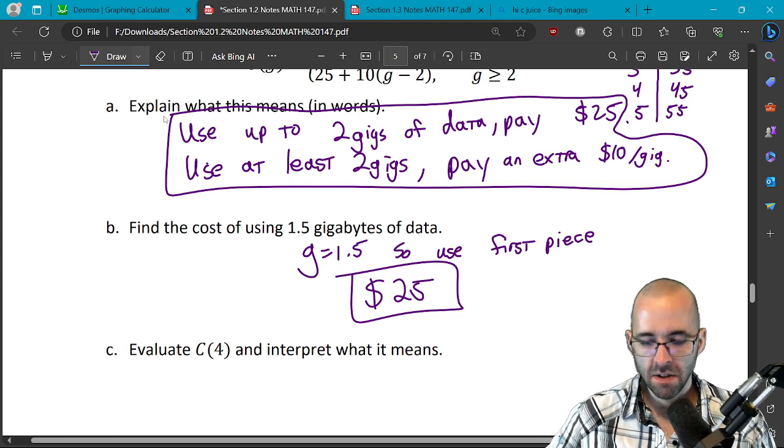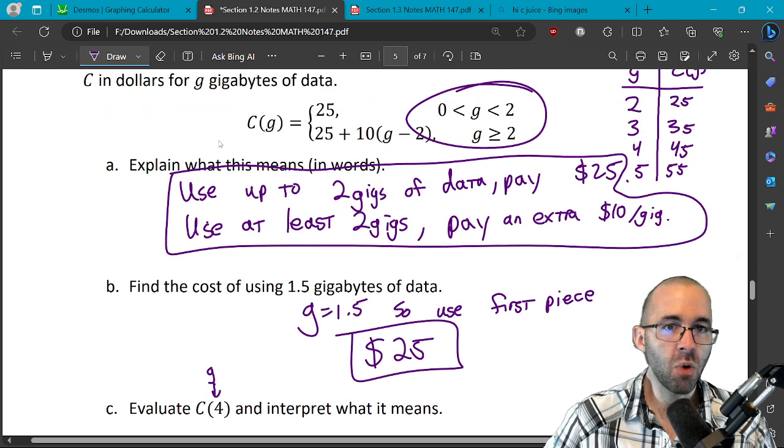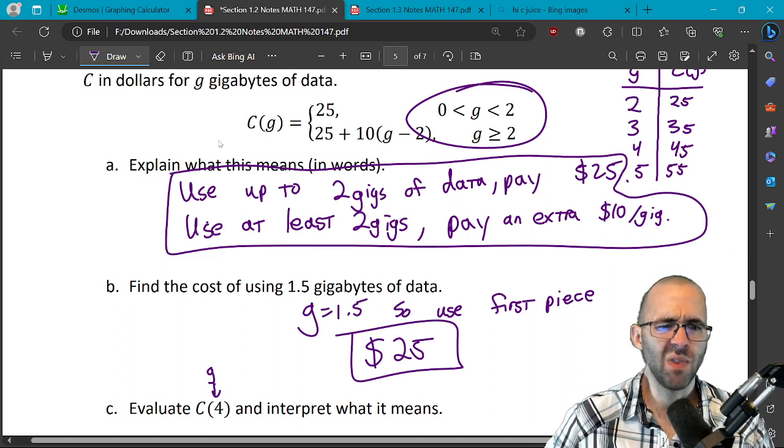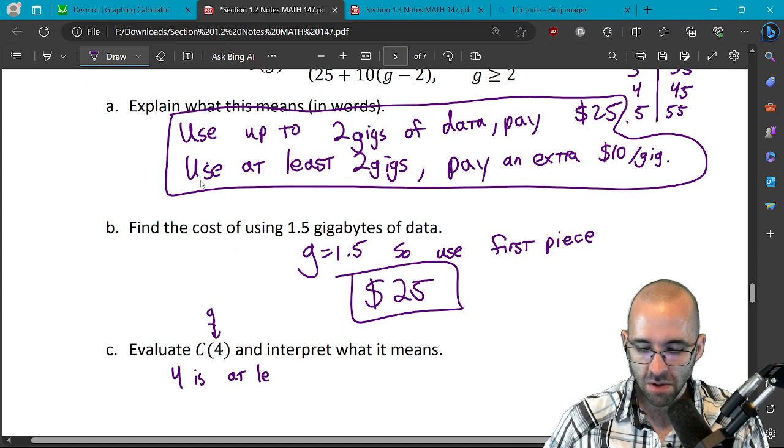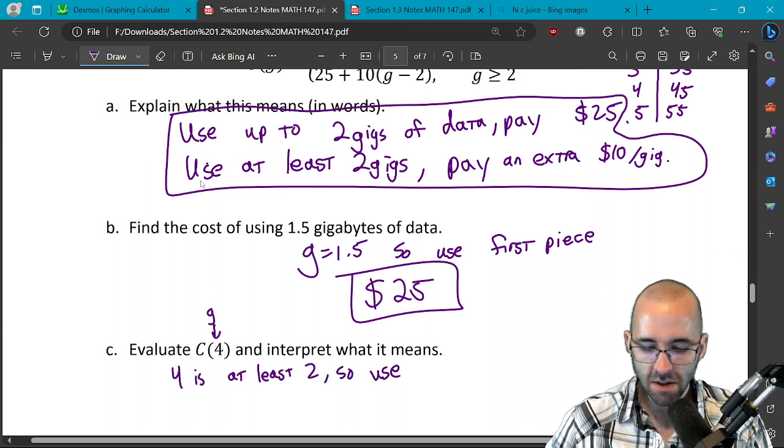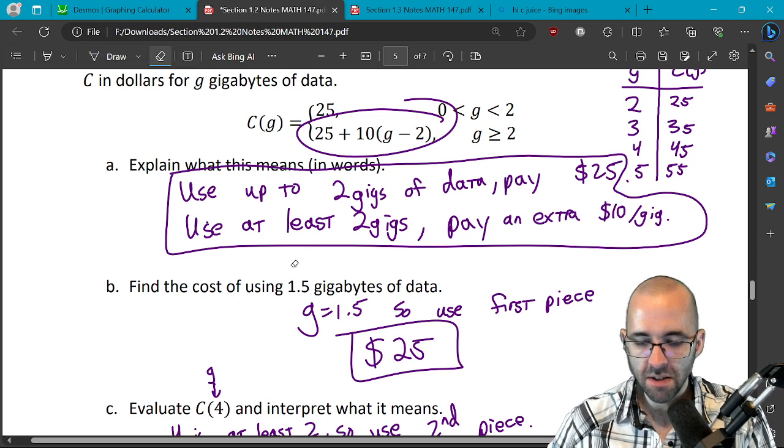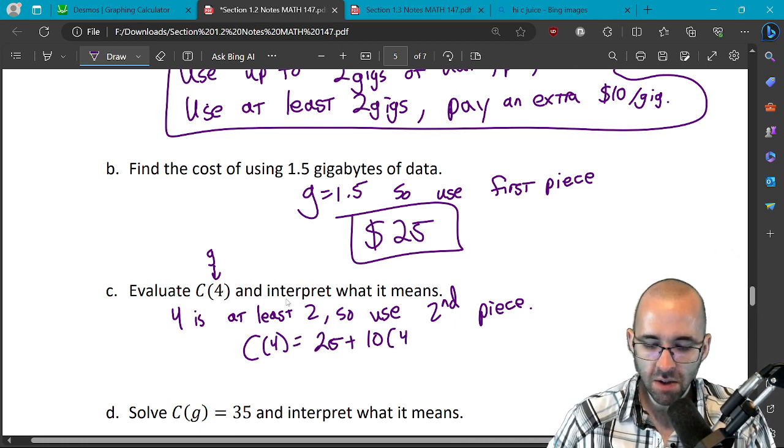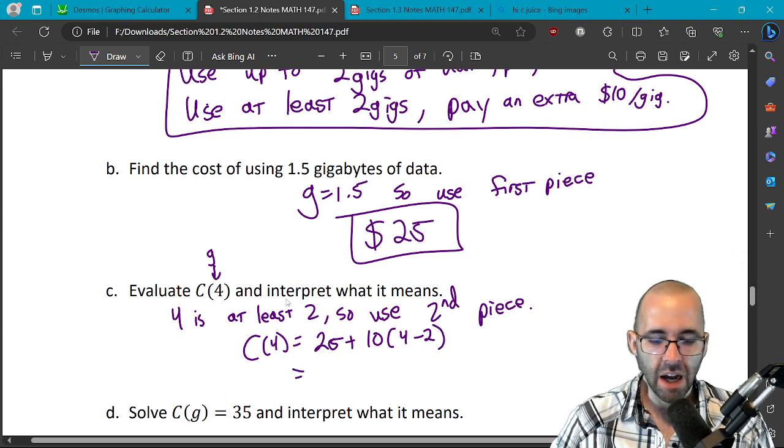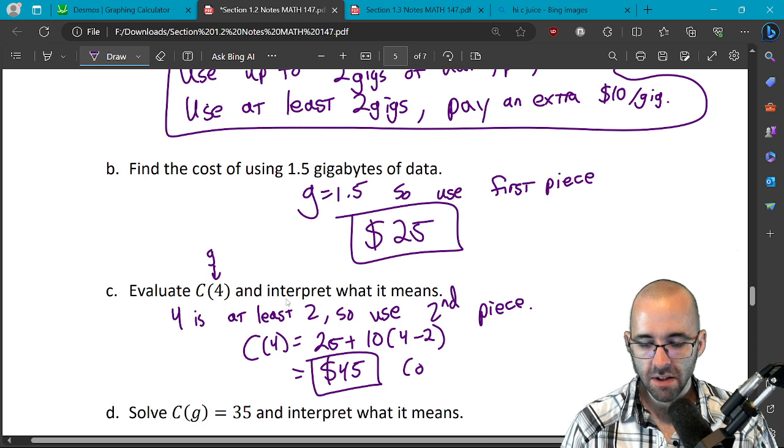Evaluate C of 4. Again 4 is our g, that's our input. So we again have to go over here and see which piece does 4 lie in. Is 4 between 0 and 2? No. Is 4 bigger than or equal to 2? Yup. So 4 is bigger than or equal to 2, is at least 2, so you use the second piece. And that says 25 plus 10 times g minus 2. You get 4, 25 plus 10 times g which is 4 minus 2, and we found that earlier with a calculator to be 45 bucks. So that's the cost of using 4 gigs.